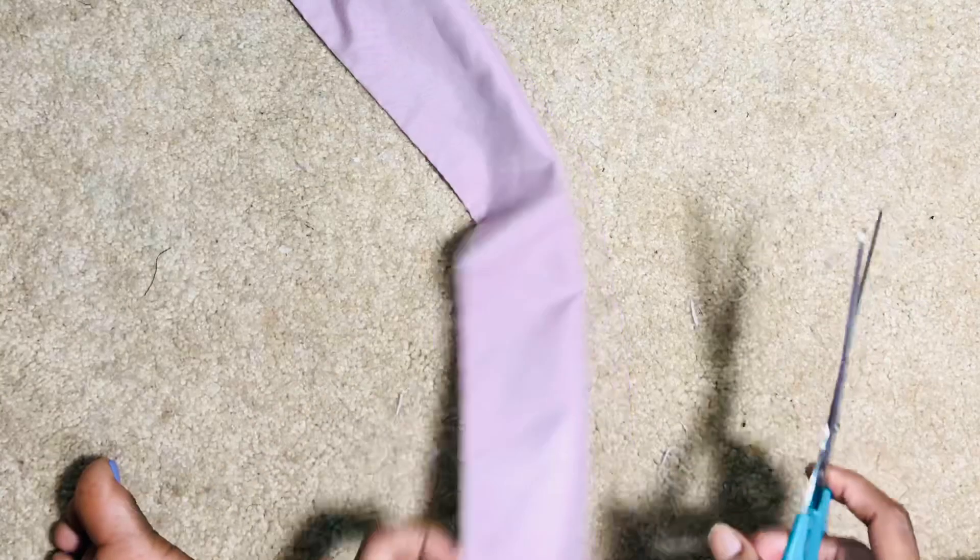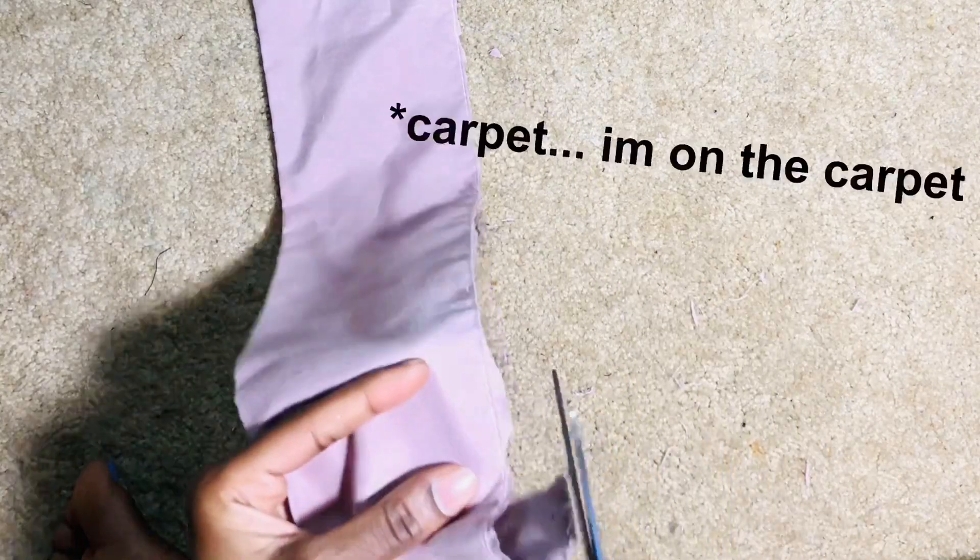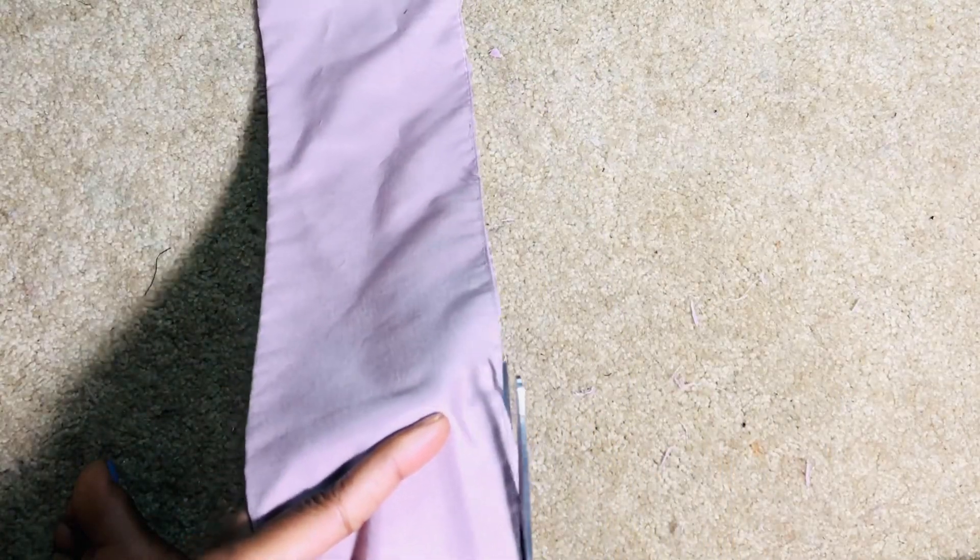I was kind of fumbling with it a lot, so I would suggest maybe taping the pillowcase down. I'm on a rug, so I couldn't really tape it, but if you were to be doing this on a hard surface, I would suggest taping it down just so it could stay in place so that you could cut it faster.